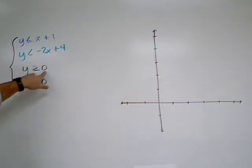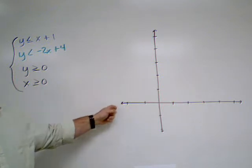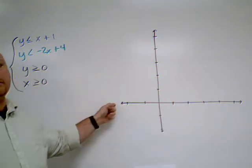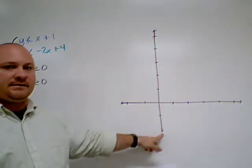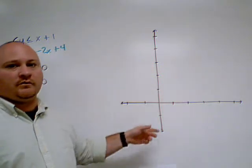Where y is actually zero is my x-axis, so that's already drawn for me. Where x is zero is my y-axis, so that is already drawn for me as well.